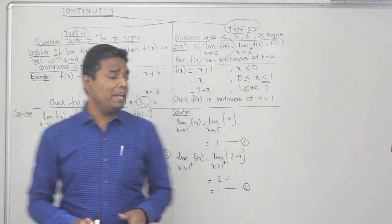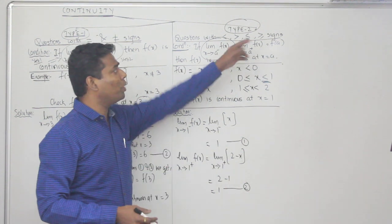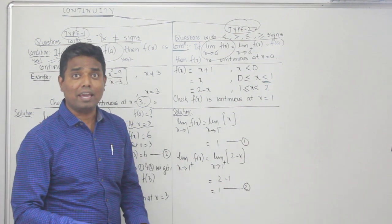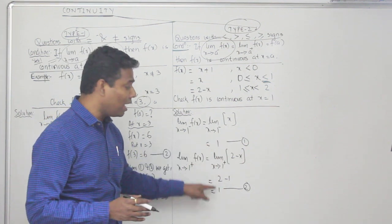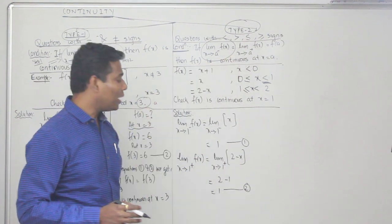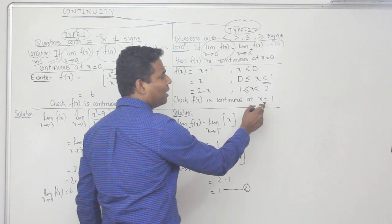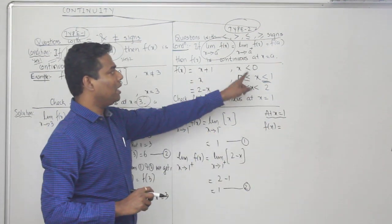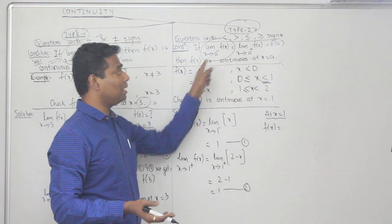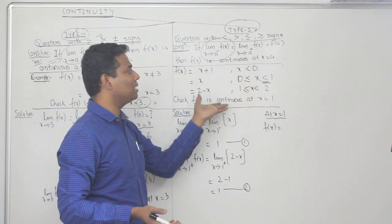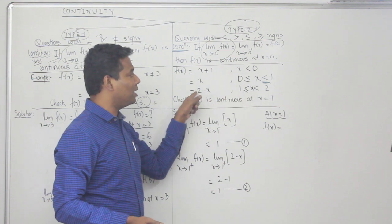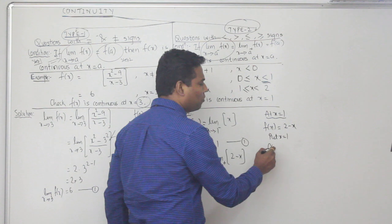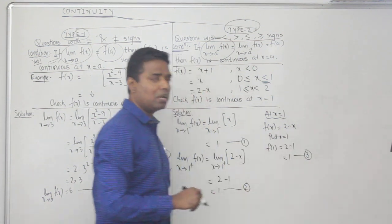Since Step 1 and Step 2 are equal, we proceed to Step 3. If they were unequal, we could conclude discontinuous and stop. Now find f(a) = f(1). At x = 1, it satisfies x ≥ 1, so we use 2 - x. Thus f(1) = 2 - 1 = 1. This is equation number 3.